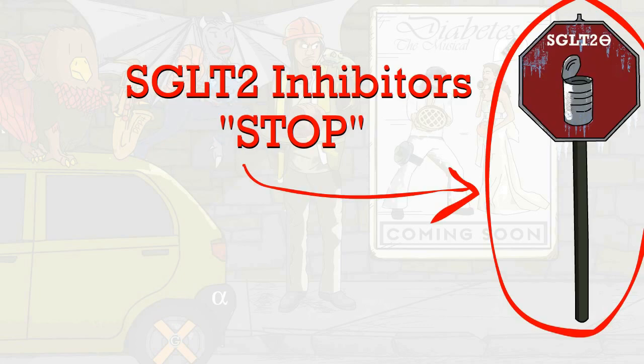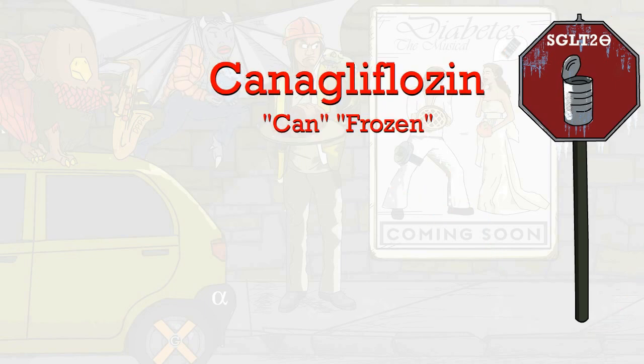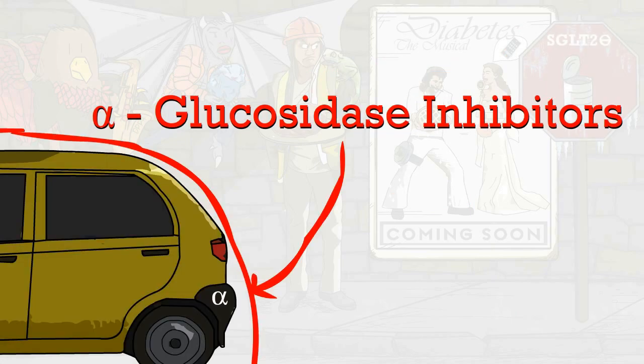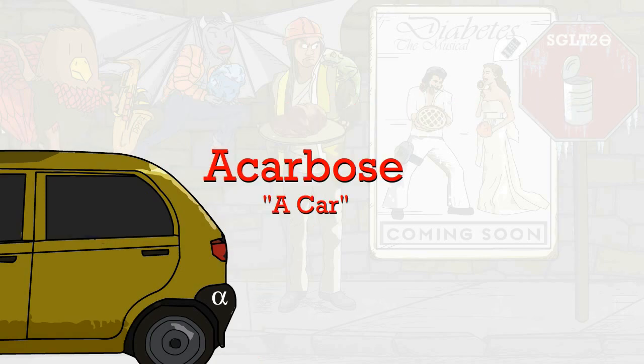Selective sodium glucose transporter-2 inhibitors, or SGLT-2 inhibitors, is represented by the stop — I mean SGLT — sign. An example is canagliflozin, which is canned frozen. Alpha-glucosidase inhibitors is represented by the car with the alpha bumper sticker. An example in this class is acarbose, represented by the car.